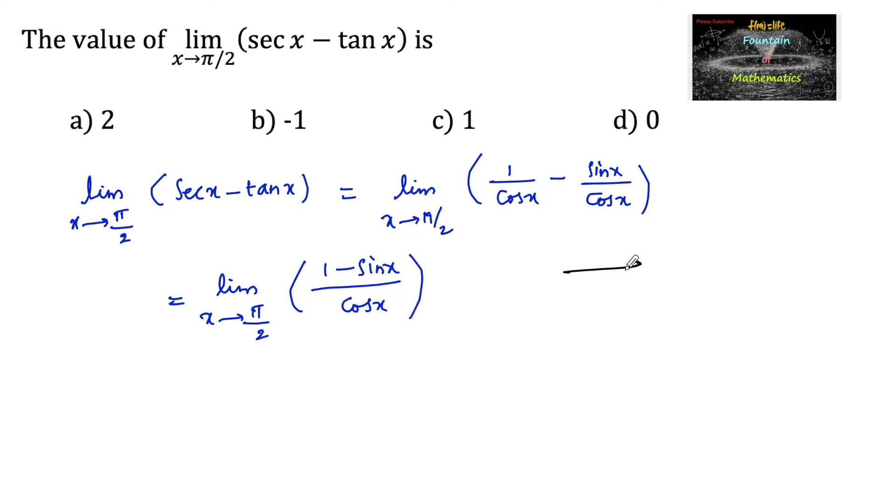Now upon substituting x equals π/2, you are getting 1 minus sin π/2 is 1, over cos π/2 is 0. So it is 0 by 0 form. When it is 0 by 0 form, we can apply L'Hôpital's rule.